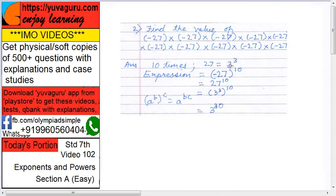So this expression becomes what? Now minus 27 raised to 10. 10 times means raised to 10, right? 2 into 2 into 2 is 2 raised to 3. 2 into 2 into 2, 5 times, so 2 raised to 5. So as many times you multiply, that same number should appear over here. So it becomes minus 27 raised to 10.